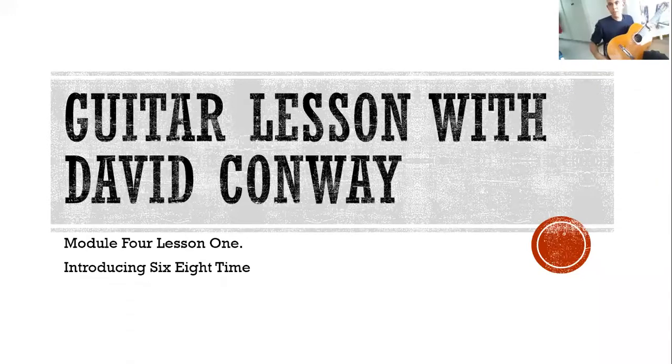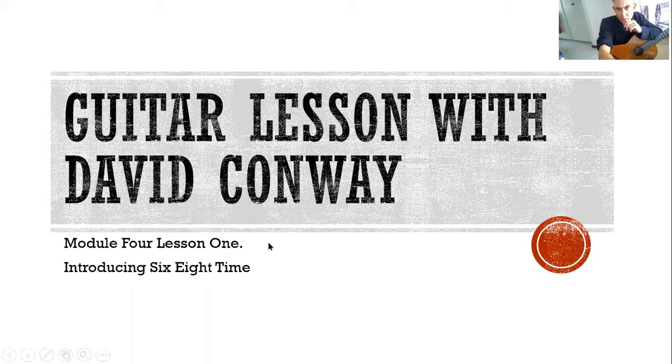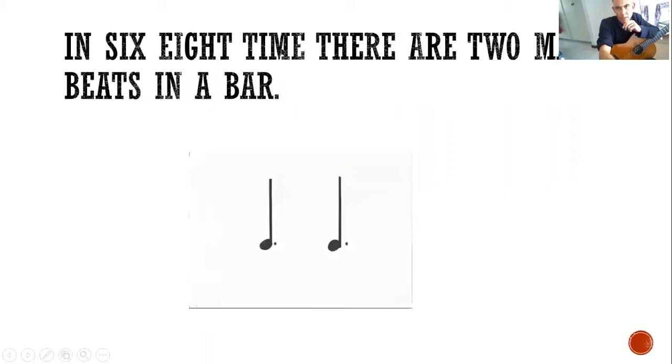Hello and welcome to a guitar lesson with David Conway. This is module four, lesson one, introducing six-eight time. In six-eight time there are two main beats in a bar: one, two. One dotted crotchet, two dotted crotchets. The dot adds half of the note's value to it.